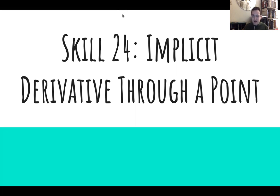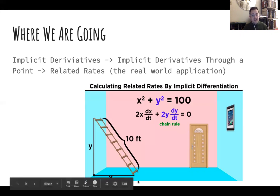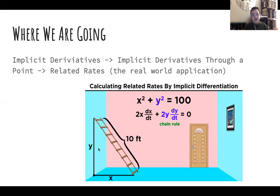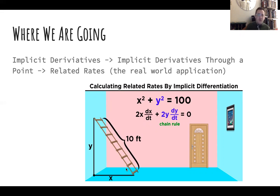Today we are going to be building a little bit off of implicit derivatives and looking at implicit derivatives through a point. Where we're going next class is some real-life applications — I'll introduce some geometric formulas, area formulas, Pythagorean theorem. Next class we'll be doing related rates problems. I call this the movable ladder problem, where maybe the ladder is sliding down at a certain rate, and you think about the rate at which it is going outwards.